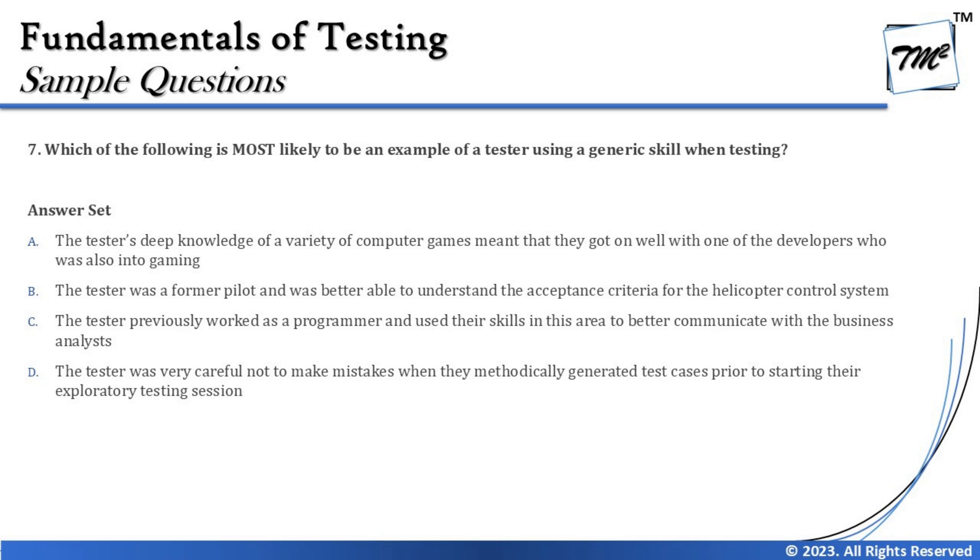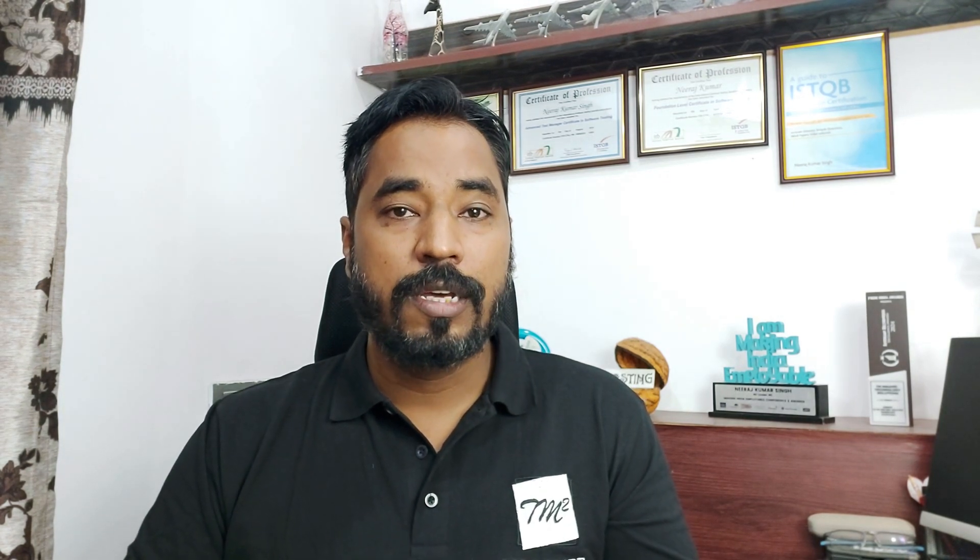The next question is question number seven, which asks: which of the following is most likely to be an example of a tester using general skills when testing? A quick recap — when talking about the general skills of testers, we've discussed technical skills, past experience, domain knowledge, and participation in different activities, all of which matter to make testing successful. Competencies in technical and soft skills are contributing elements throughout.